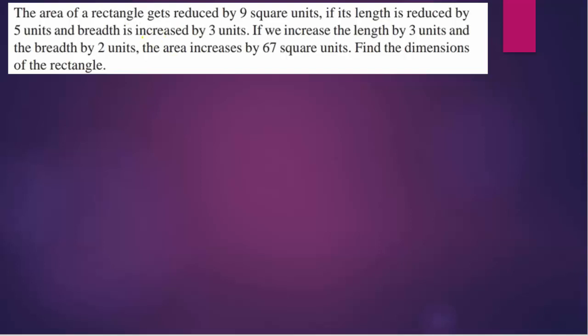Let us start. The area of a rectangle gets reduced by 9 square units if its length is reduced by 5 units and breadth is increased by 3 units. If we increase the length by 3 units and the breadth by 2 units, the area increases by 67 square units. Find the dimensions of the rectangle — meaning find the length and the breadth.